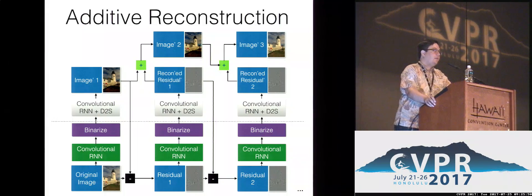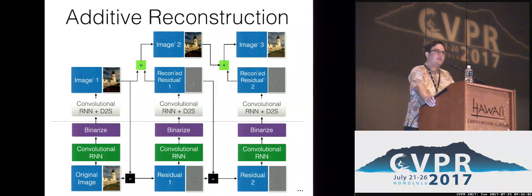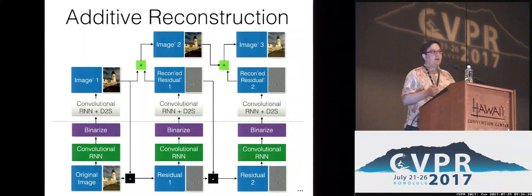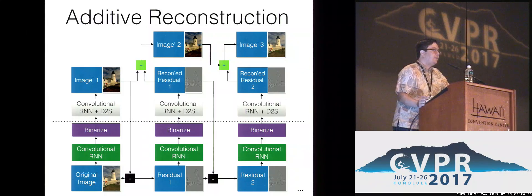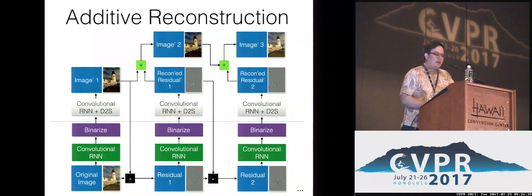This has a potential problem: we may not have enough capacity to encode the full-resolution image on the decoder side. So we analyzed a different approach — the additive reconstruction method. Here, the first step is the same as described before, but in subsequent steps, instead of reconstructing the full-resolution image, we reconstruct the current residual. The final image is then the sum of all reconstructed residuals from all iterations. However, a problem arises: every time we send another residual, the magnitude of its values will decrease, so the statistics change from iteration to iteration. This might be a problem if the encoder is not fully efficient across all possible ranges of values.